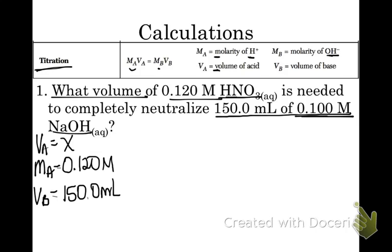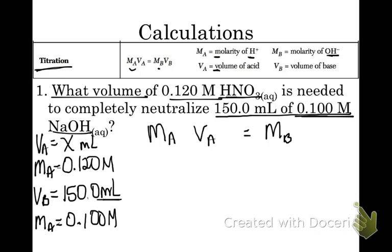And the concentration of your base, or your molarity, or your concentration of your base is 0.100 molar. Since you know that the volume here is in mL, we'll make the volume of our acid our unknown in mL as well. So we'll create our equation: MA times VA is equal to MB times VB.